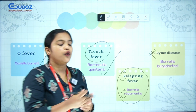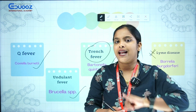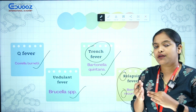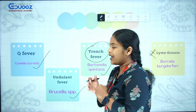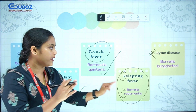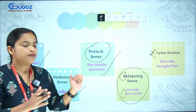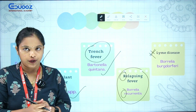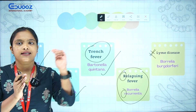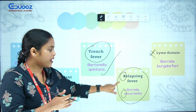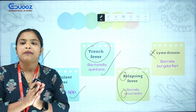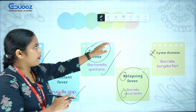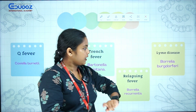We have Q Fever — that is Coxiella burnetii. Undulant Fever is Brucella species. Trench Fever is Bartonella. Then Borrelia species: Borrelia recurrentis causes Relapsing Fever, and Borrelia burgdorferi causes Lyme Disease.